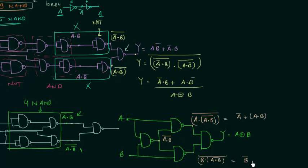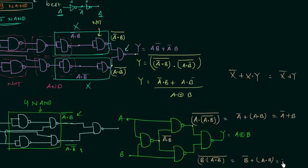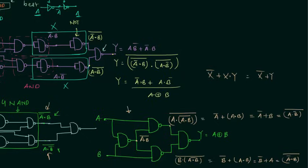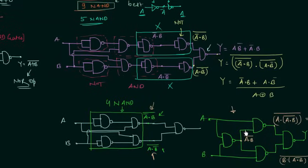Using the Boolean identity X complement or X and Y equals X complement or Y, the second gate simplifies to A complement or B, and the third to B complement or A. A complement or B can be written as A and B complement complement, and B complement or A as A complement and B complement. These match the required results, confirming this is the most efficient implementation — you need to use your logic to arrive at this circuit.